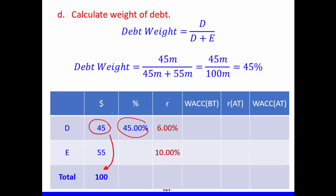In our table, the first column has our variables — market value of debt and market value of equity. The second column has the dollar amounts. The third column has the weight or percentage. The fourth column has the cost: pre-tax cost of debt and cost of equity. Then we have a before-tax WACC column, after-tax cost of debt, and finally the after-tax WACC column.